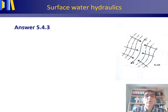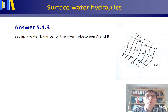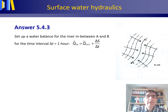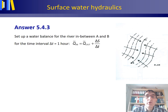How do we go about solving this? We need to set up a water balance for the river in between A and B for the time interval of one hour. The water balance reads that the average inflow at the upstream measuring station A during one hour equals the average outflow at the downstream measuring station B during one hour, plus delta S over delta T — the change in storage during the one hour in the channel reach AB.